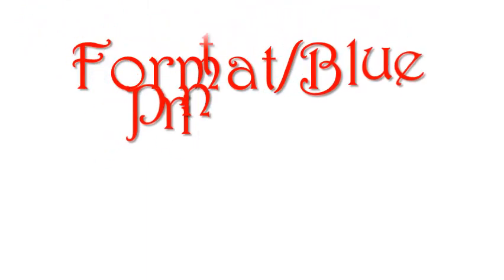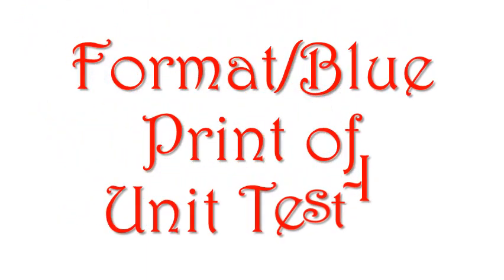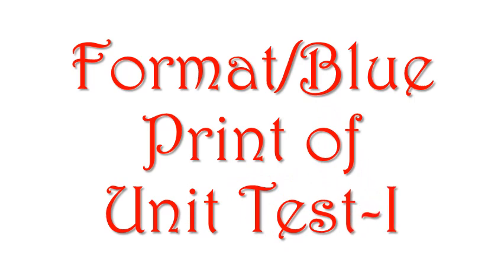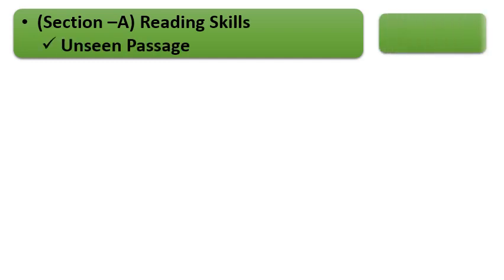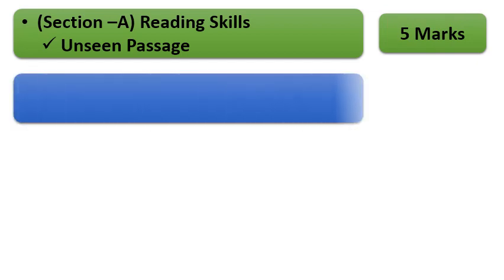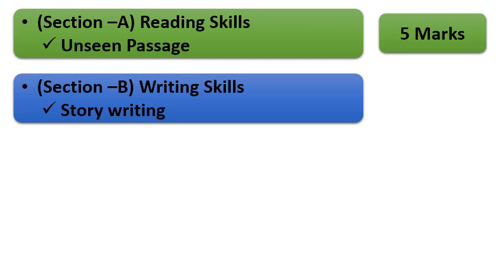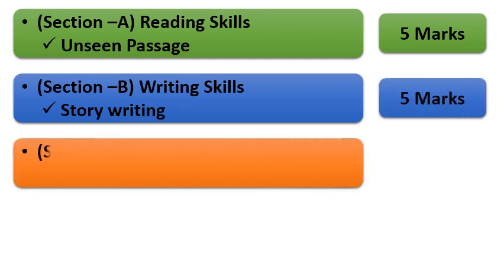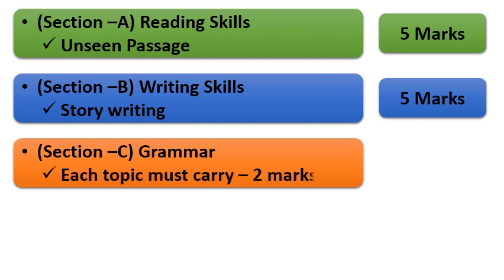So now, let's know about your format or blueprint of UT1. Number 1 is Section A, that is reading skills. Under it, unseen passage is there. It carries five marks. Number 2, Section B, that is writing skills. Under it, story writing is there. It carries five marks. Number 3, Section C, that is grammar. Chapters 1 to 5 are there. Each topic must carry two marks. So total grammar is of eight marks.